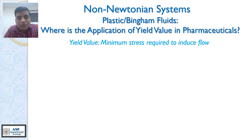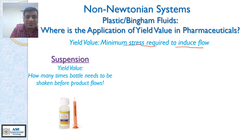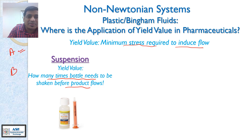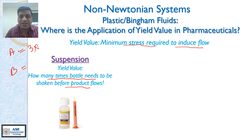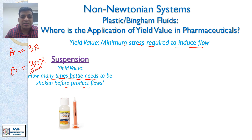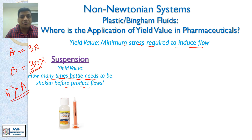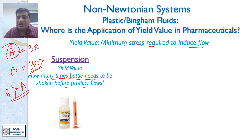Yield value is the minimum stress required to induce flow. If you are developing a suspension, the yield value tells you how many times you need to shake the bottle in order to get all the solids back into the body of liquid. For example, suspension A requires only three shakes, while suspension B requires 30 shakes. Suspension B will have a higher yield value, and suspension A will be more acceptable for patients.